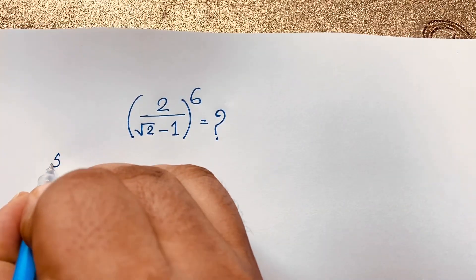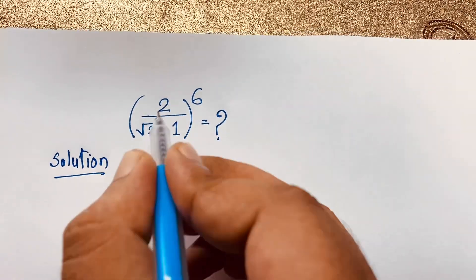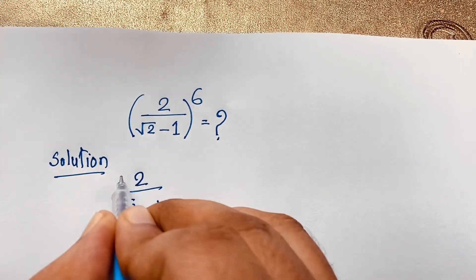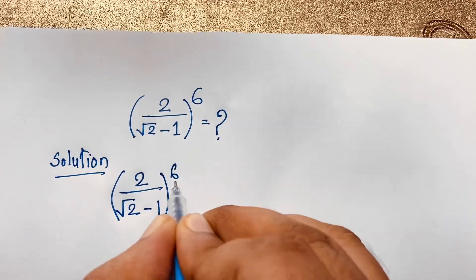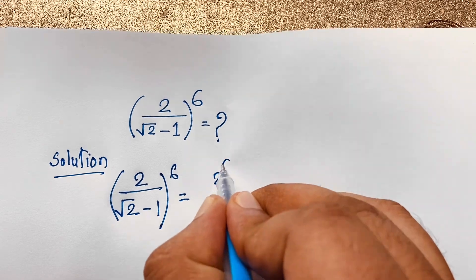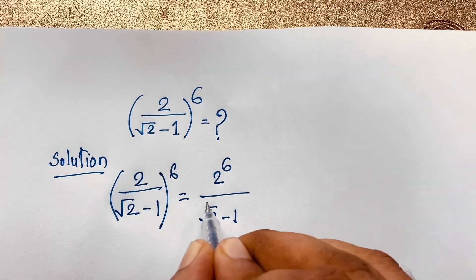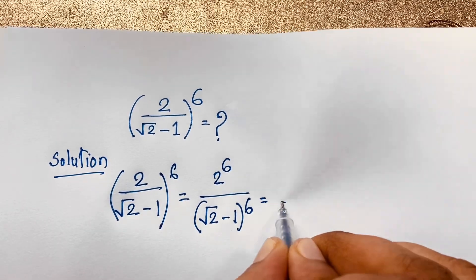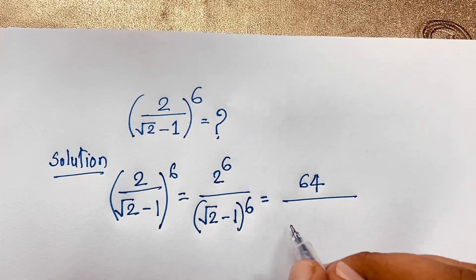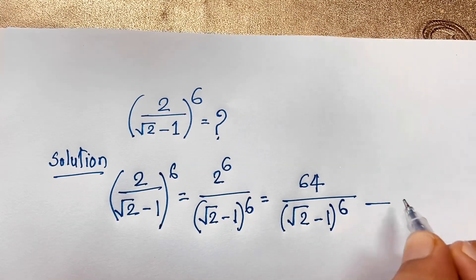Our math solution for simplification: we take our question 2 over (√2 minus 1), bracket to the power 6. According to the exponential formula, this expression becomes 2 to the power 6 over (√2 minus 1) bracket to the power 6. Then 2 to the power 6 equals 64, giving us 64 over (√2 minus 1)^6. This is our first equation.